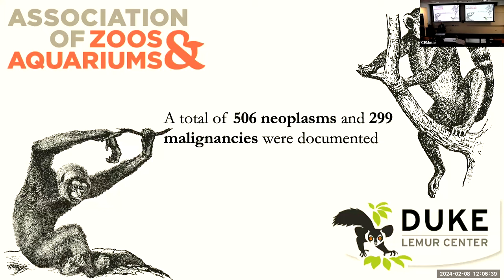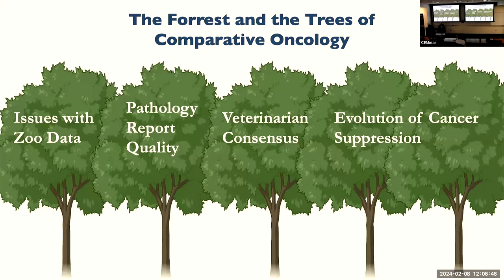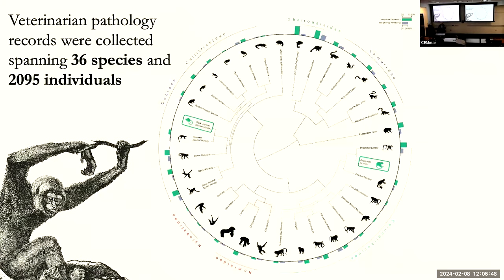You really get this natural formation of a database that you can use to explore questions like: do all species that we know get cancer? Is cancer uniform across the tree of life? Are there differences in cancer prevalence across the tree of life? You get a wealth of questions that you can ask when you spend the time to collect these veterinarian pathology records.